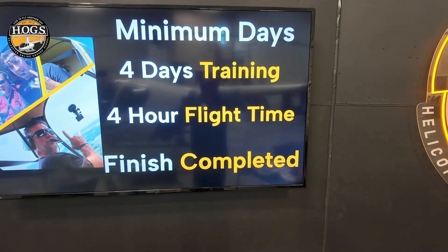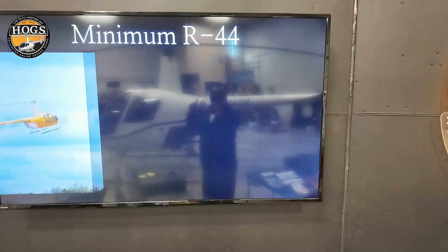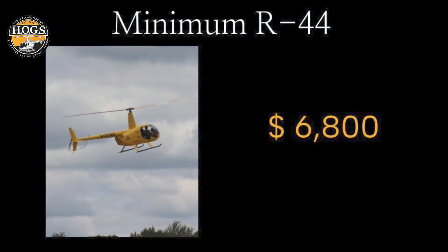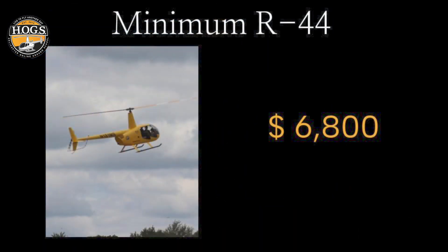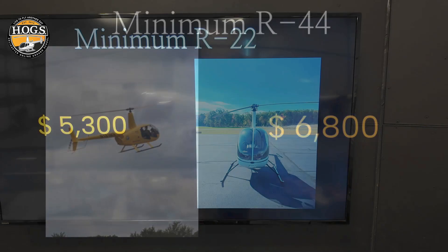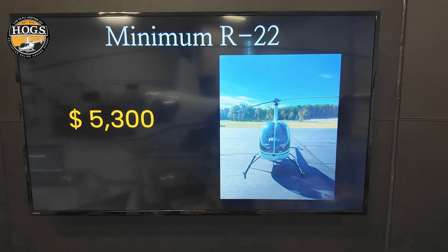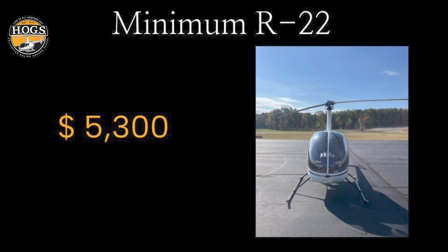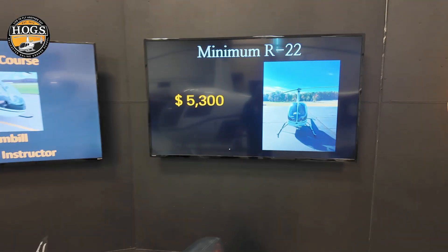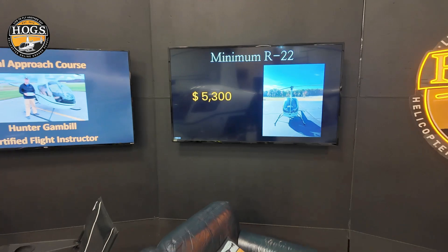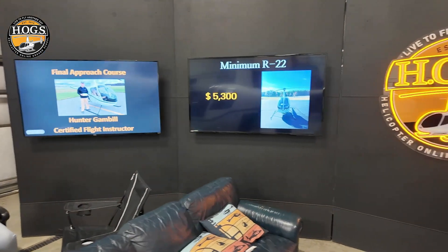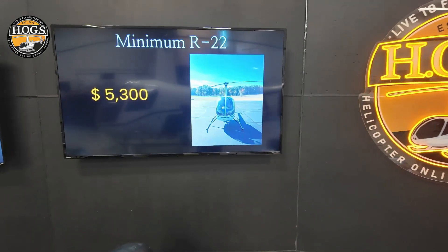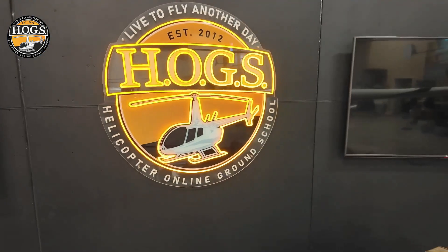You have two choices: R-22 or R-44. The minimum for the R-44 is $6,800 for the minimum package to get you finished. If you need more time we can always work something out, or if you want a VIP package. The minimum for the R-22 is $5,300 — again, that is the minimum. We've been working with this same examiner for 24 years, and we've completed 19 of these — you could be 20, 21, or 22. Get finished up for the spring, get on the schedule now. Go down below, fill out that questionnaire, and we'll get back to you.